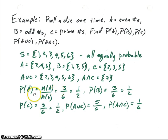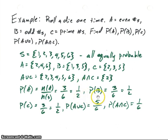When we find the probability of each event, we just find the number of elements in the event divided by the number of elements in the sample space. For A, there are three elements and six in the sample space, so the probability is 3/6, which is one half. The probability of B is also 3/6, or one half. Same for C — there are three elements in that set, so the probability is 3/6, or one half.